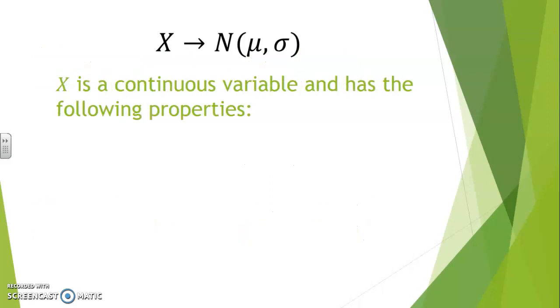If X obeys a normal distribution of average mu and standard deviation sigma, then the following properties apply. The support for X are all real numbers.